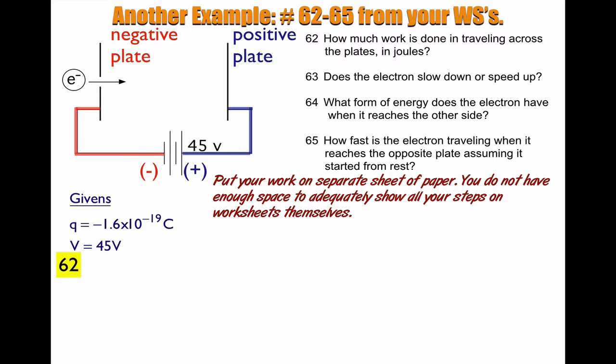So number 62, how much work is done in traveling across the plates in joules? Work is equal to Q times V, so that's pretty straightforward. It's the givens themselves. So negative 1.6 times 10 to negative 19 coulombs times 45 volts. That gives me 7.2 times 10 to negative 18 joules.